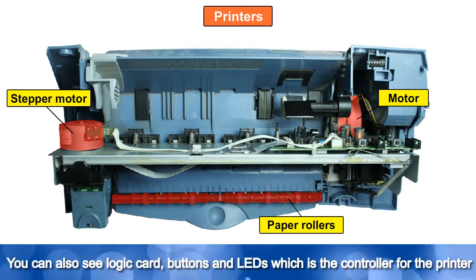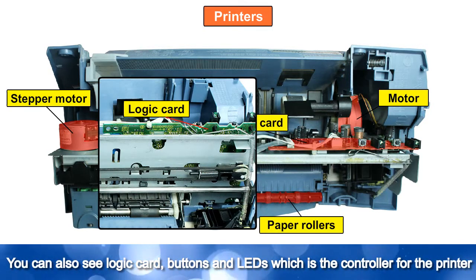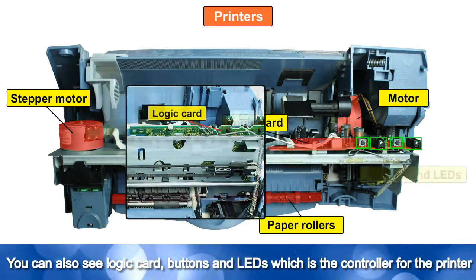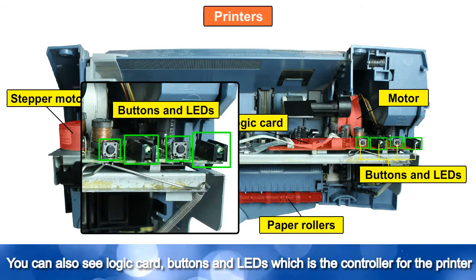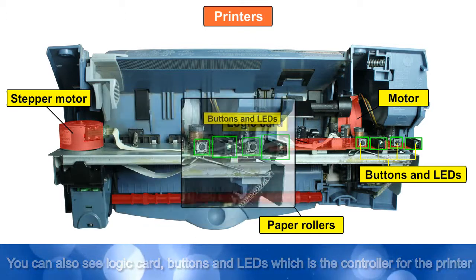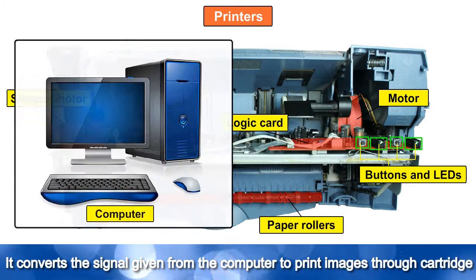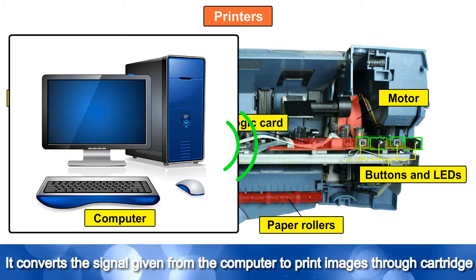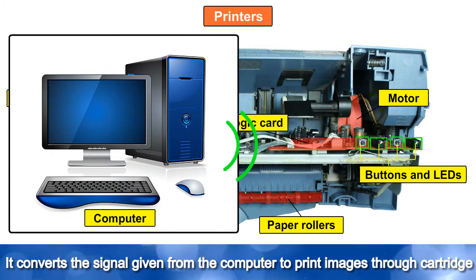You can also see the logic card, buttons, and LEDs which act as the controller for the printer. It converts the signal given from the computer to print images through the cartridge.